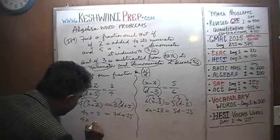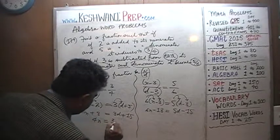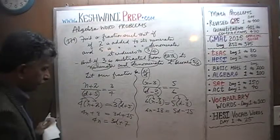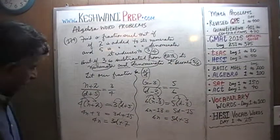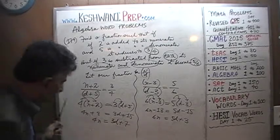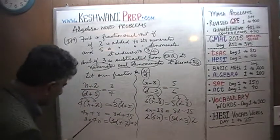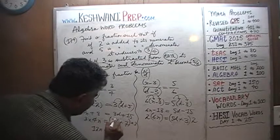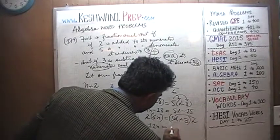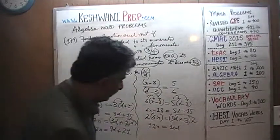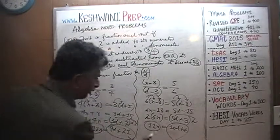Rearranging: from the first equation, 4N equals 3D plus 7 (bringing 8 to the right). From the second equation, 6N equals 5D plus 3 (bringing 18 to the right). Multiply the first equation by 3: we get 12N equals 9D plus 21. Multiply the second by 2: 12N equals 10D plus 6. Since both equal 12N, it follows that 9D plus 21 equals 10D plus 6.